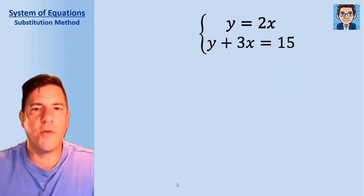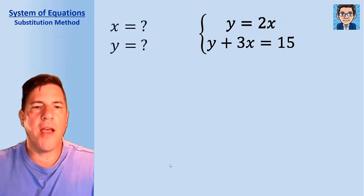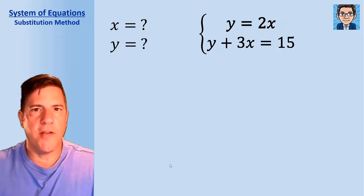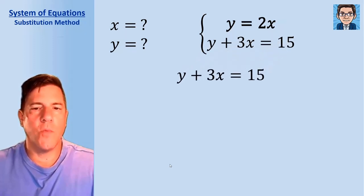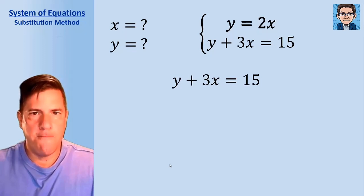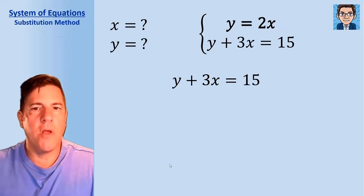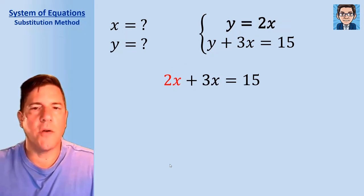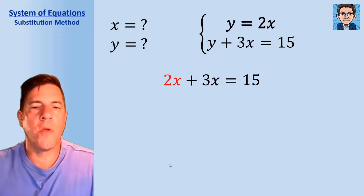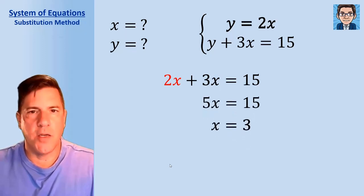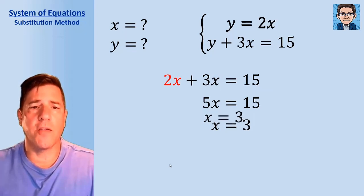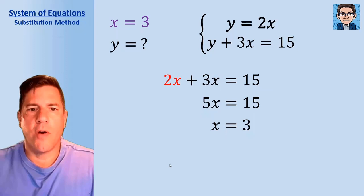Let's take a look at the substitution method. We've got two equations and we're trying to find the x and y that make both true at the same time. Take the equation y plus 3x equals 15. The first equation tells us that y equals 2x, so we can substitute 2x in for y. Then we combine like terms: 2x and 3x gives us 5x equals 15. Divide both sides by 5 and we get x equals 3.